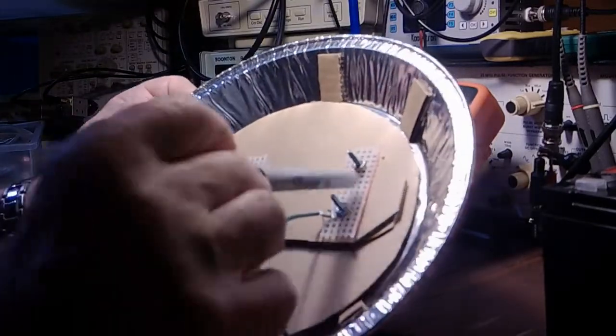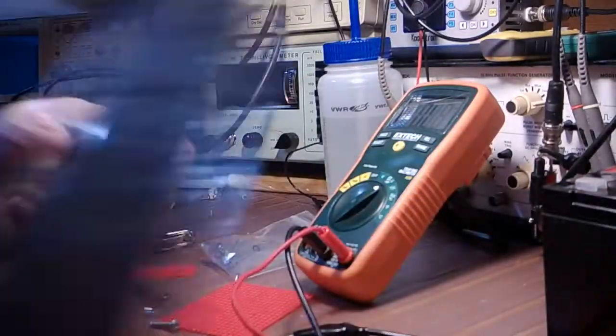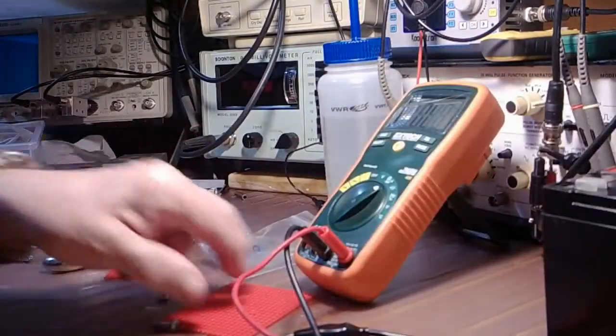Well, what you need to insulate this with is you've got to ensure that the screws going through don't touch the aluminum. So here's how I go about that.